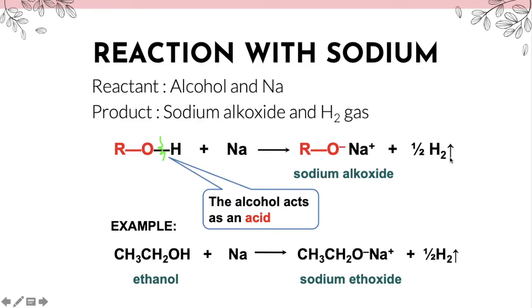The upward arrow means gas is released. For example, ethanol reacts with sodium metal producing sodium ethoxide — the sodium part combined with the ethoxide ion — plus half of hydrogen gas released.